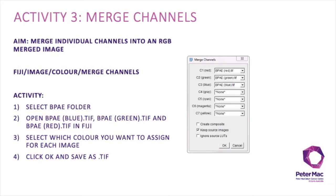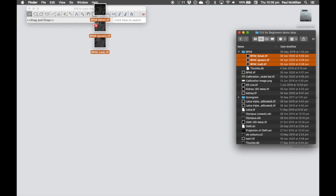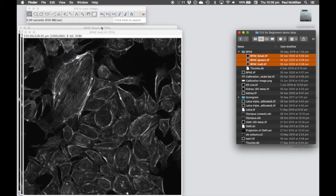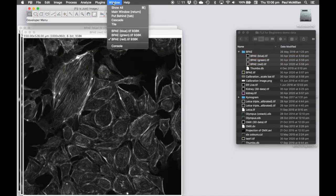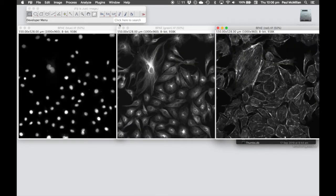Activity 3 is merging channels. In this case we're going to take individual channels and merge them into an RGB image. We're going to open up the BPAe folder and highlight all three BPAe blue, green and TIFF images to use in this activity. We can drag and drop these all at the same time. Since they're sitting on top of each other, let's go to Window Tile, just to make that a bit easier for us to visualize.